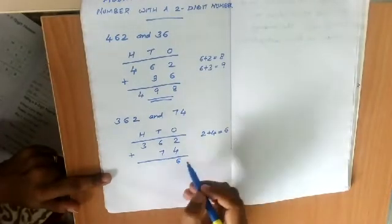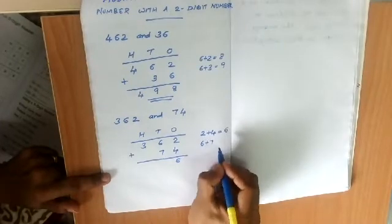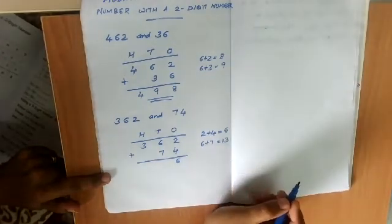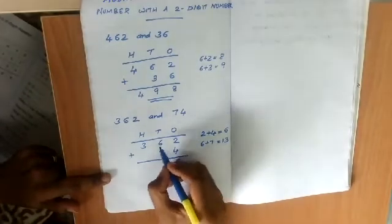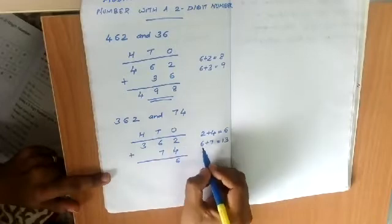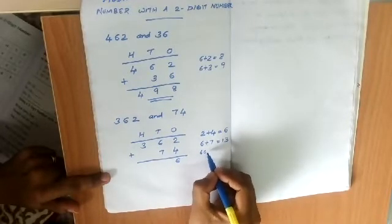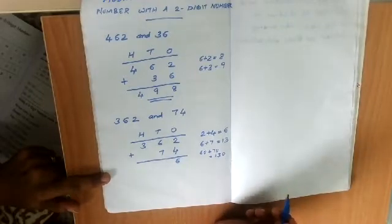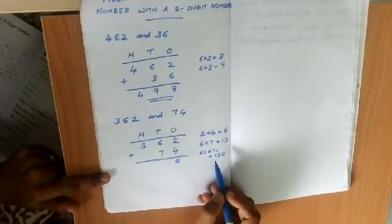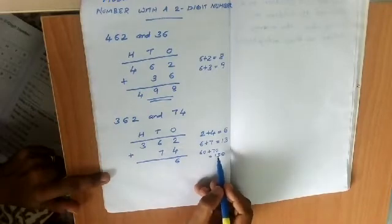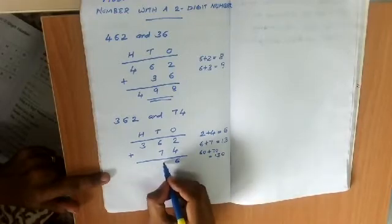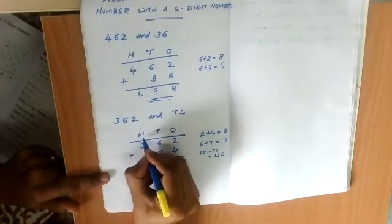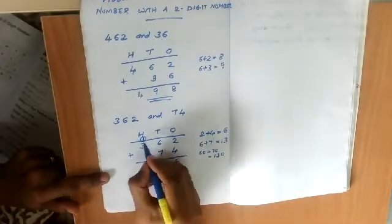Now in the tens place there are 6 and 7. We have to add 6 plus 7, which is 13. Since 6 and 7 are in the tens place, this actually means 60 plus 70 equals 130, which is 13 tens. So the 3 comes in the tens place and the 1 will carry over to the hundreds place.